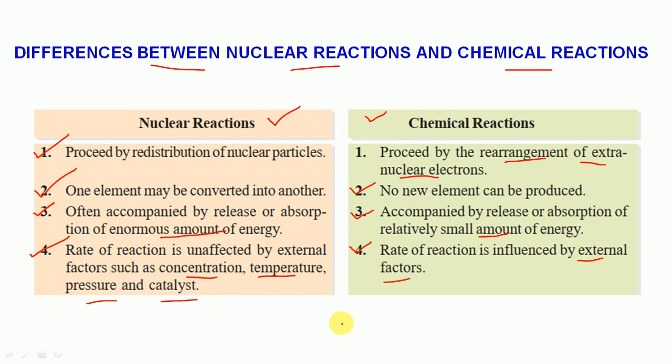To summarize the nuclear reaction points: first, redistribution of nuclear particles. Second, one element is converted into another. Third, often accompanied by release or absorption of enormous amount of energy. Fourth, rate of reaction is unaffected by external factors such as concentration, temperature, pressure, and catalyst.